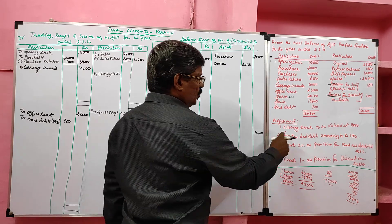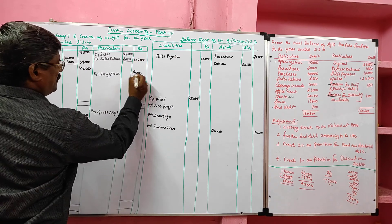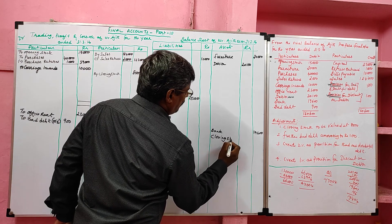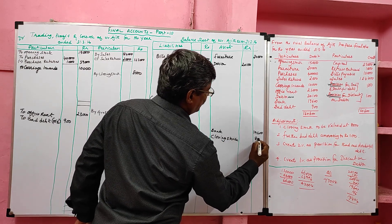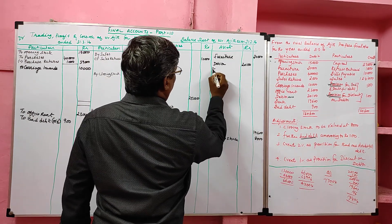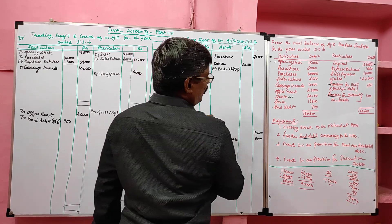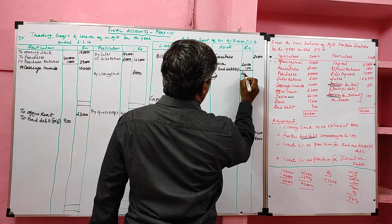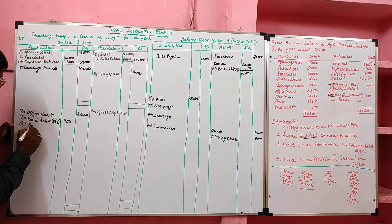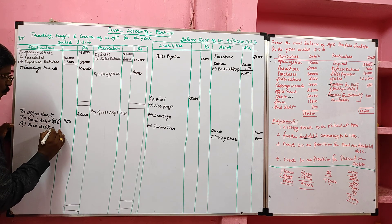Take the first adjustment: closing stock to be valued at 8,000. This adjustment affects two places — trading account credit side and balance sheet asset side, value 8,000. Then the second adjustment: further bad debts of 100 rupees — this is new bad debts. Deduct new bad debts from debtor; value 100, so balance is 20,000. The new bad debts should be added with the old bad debts.